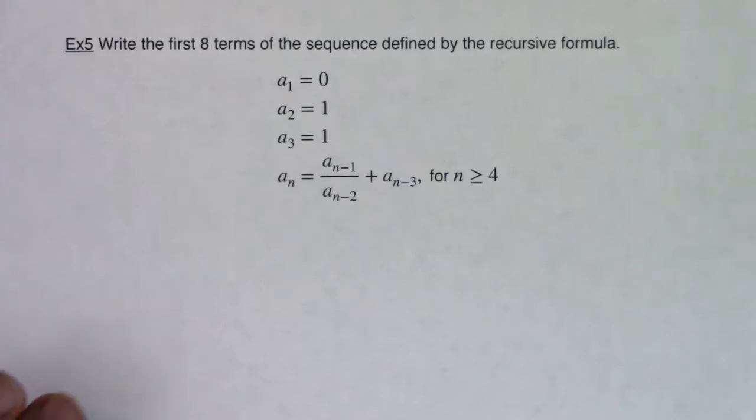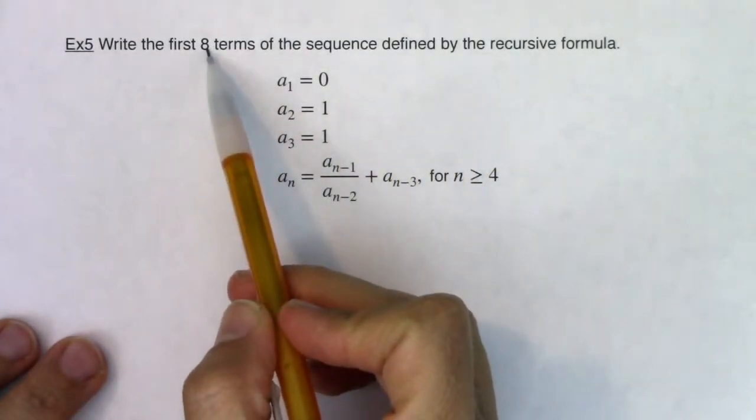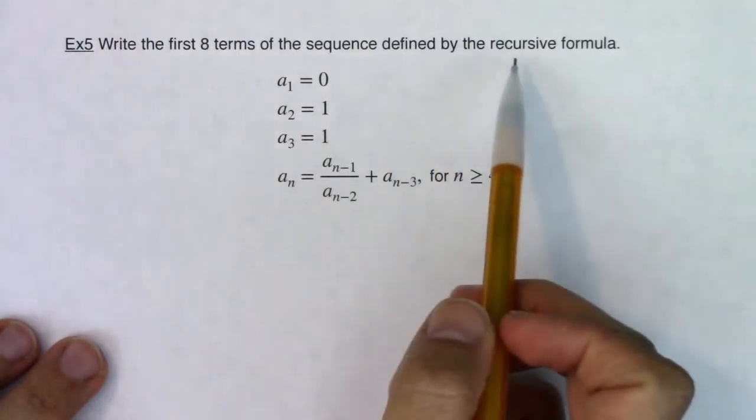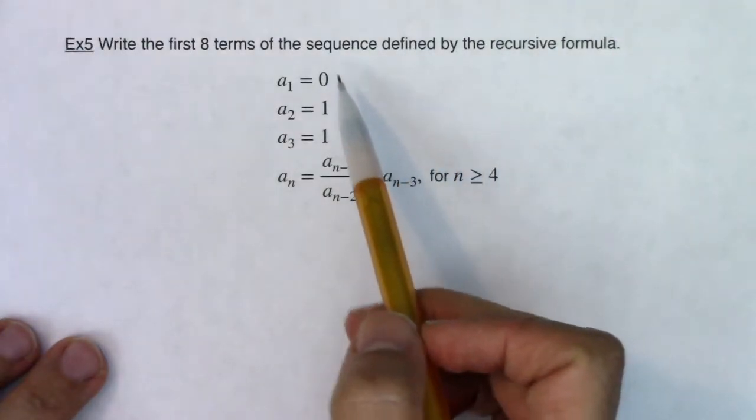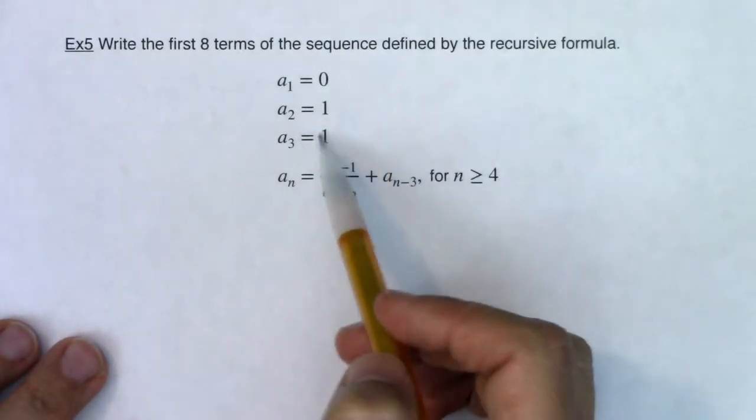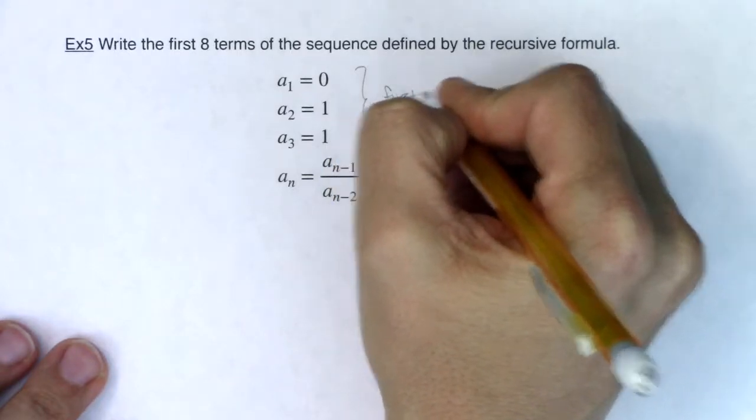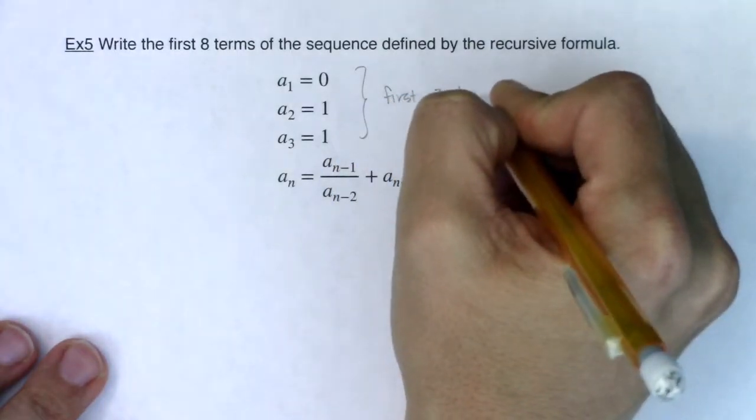Hey MAT31, welcome to example five. So now we are being asked to write the first eight terms of a sequence defined by this recursive formula. And you can see here that they didn't just give us the first term, they gave us the first three terms. So the first three terms are given in this problem.